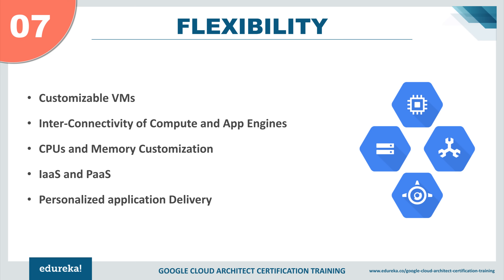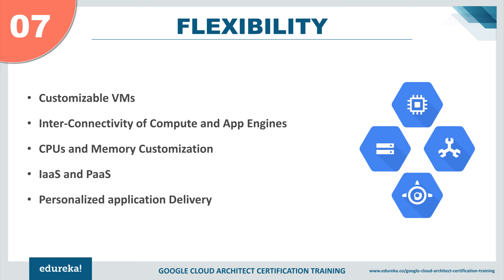At number seven, we have flexibility. Custom machine types is a feature of Google Compute Engine that lets you easily create a machine type customized to your needs. You can create virtual machines with the optimal amount of CPU and memory required for your workloads — from as little as one virtual CPU to as many as 64 virtual CPUs. With Compute Engine you get infrastructure as a service, and with App Engine you get platform as a service, all under one roof. The flexibility of Compute Engine and App Engine allows you to create a fully managed, customizable machine that can be scaled up or down according to traffic or requirements, breaking down the barriers between IaaS and PaaS.